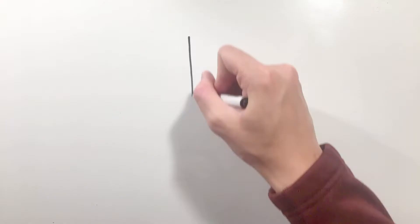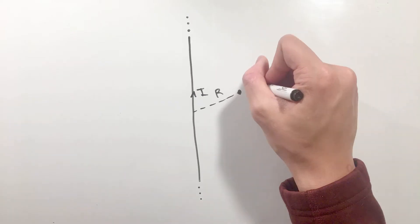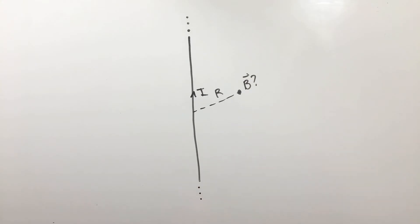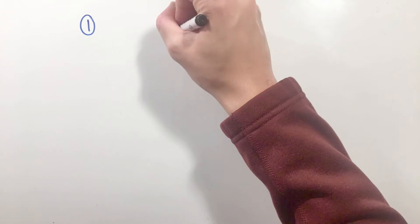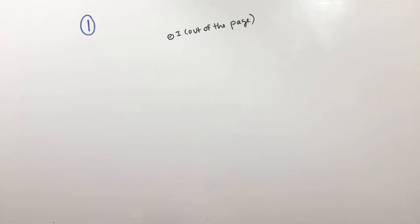Let's see this process in action, with three common current geometries you may come across, starting first with a magnetic field outside of an infinitely long current-carrying wire. For the sake of visualization, let's take a look at a wire with a current I that is directed out of the page.